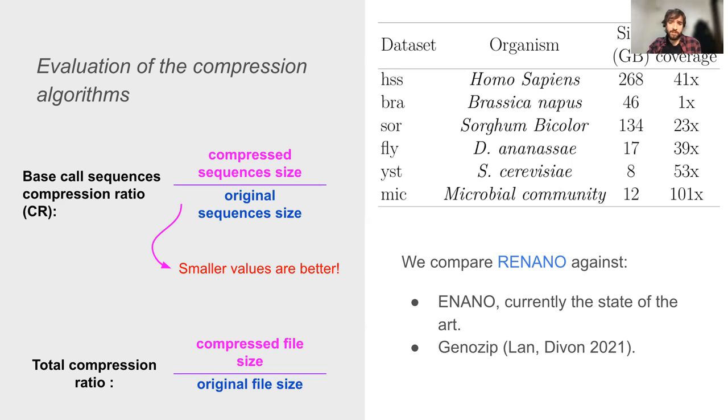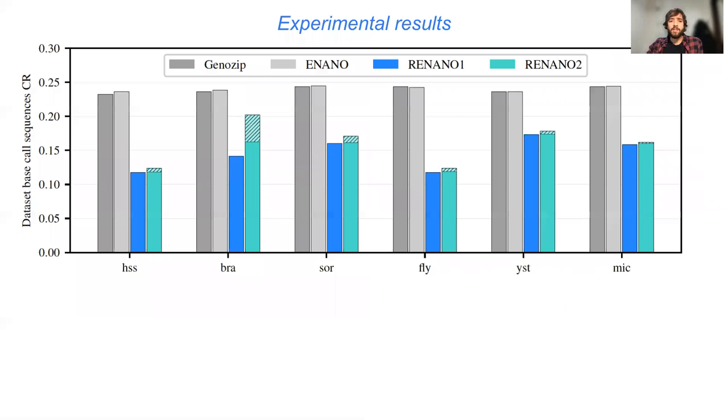Also, we can easily extend the definition to the total file size compression ratio analogously. Now, let's see the results. In the graph, we show the compression ratio of each compressor on each tested dataset. In particular, the dashed part of ReNano2's bar represents the space used for the compacted reference.